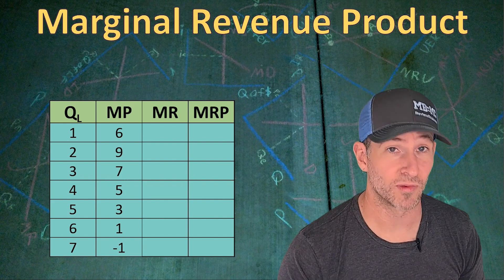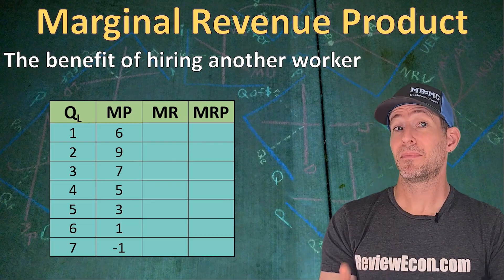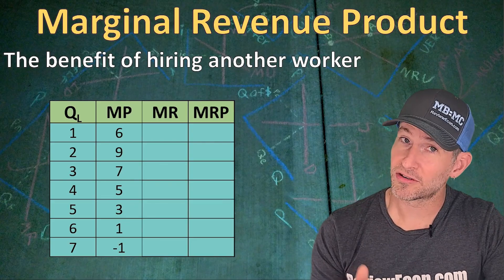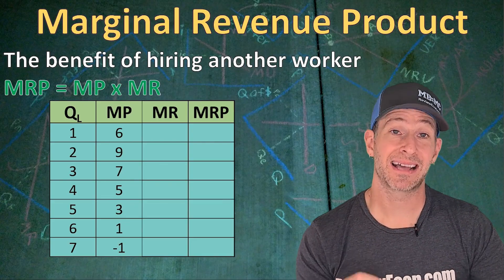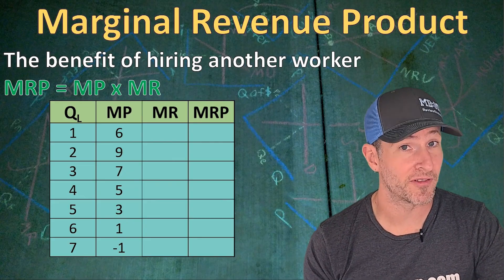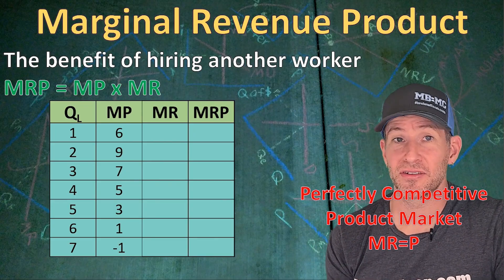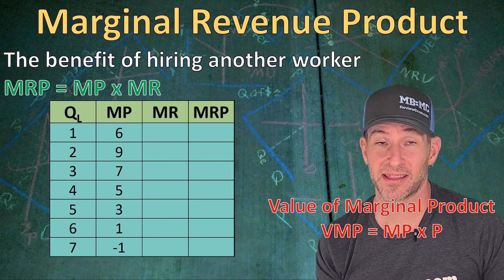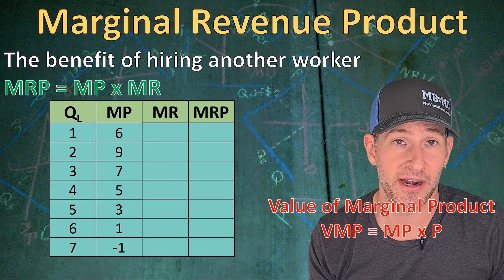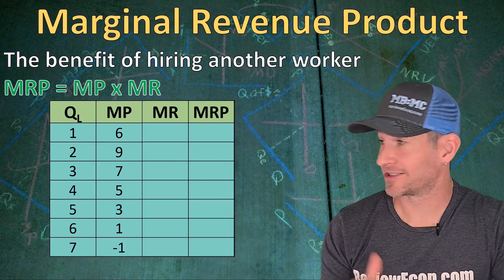Next, we're going to talk about the marginal revenue product. Marginal revenue product is the benefit of hiring an additional unit of labor — it's the money brought in from selling the products that a new worker creates. The marginal revenue product is the marginal product times the marginal revenue. For most questions on your exam, the firm is likely selling its product in a perfectly competitive market, and in a perfectly competitive market, the marginal revenue equals the price. A side note: you could see the term value of the marginal product (VMP), which is the price times the marginal product. For a firm selling in a perfectly competitive market, the VMP and the marginal revenue product are the same, but the marginal revenue product is what we're focused on here.